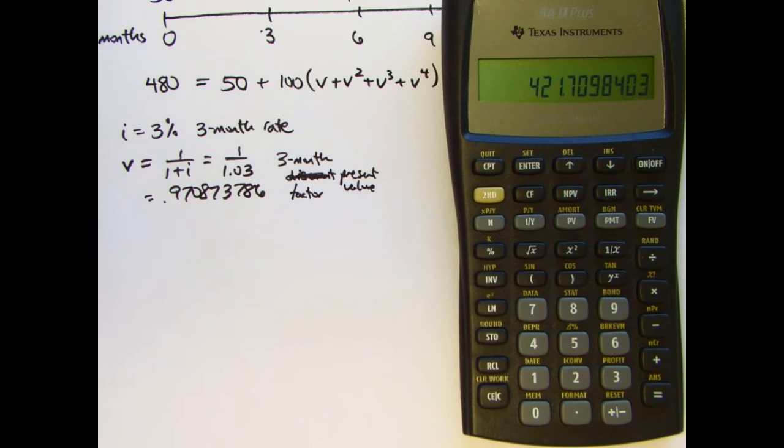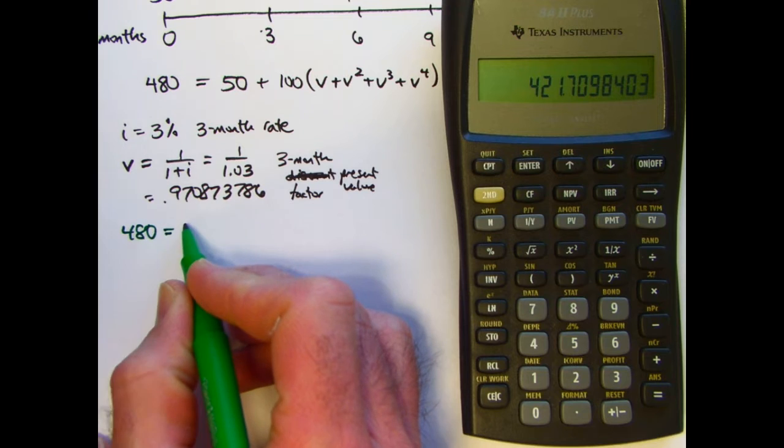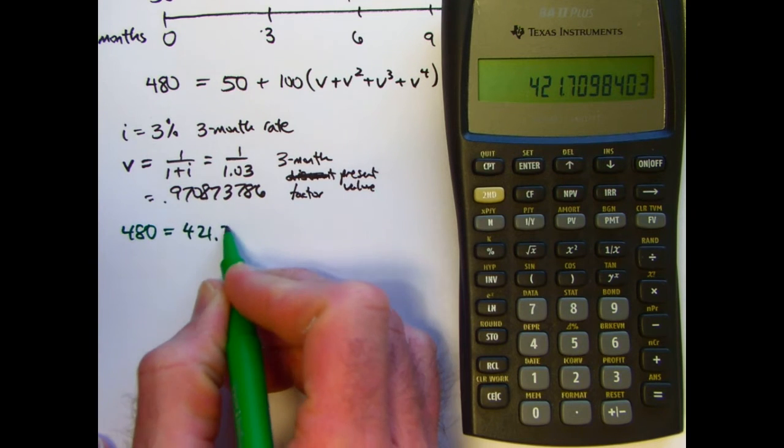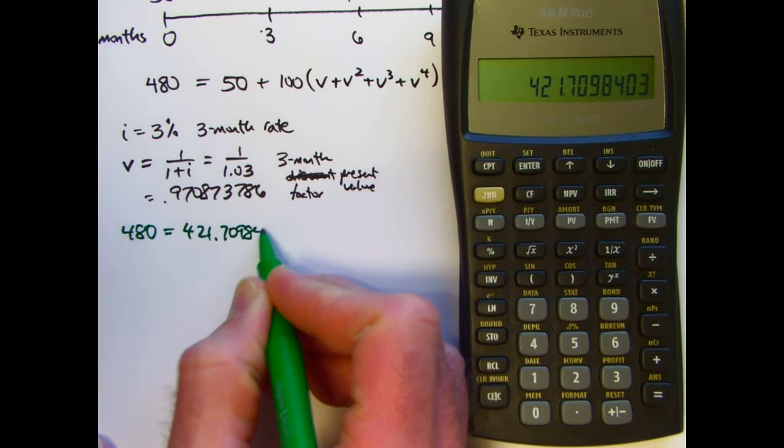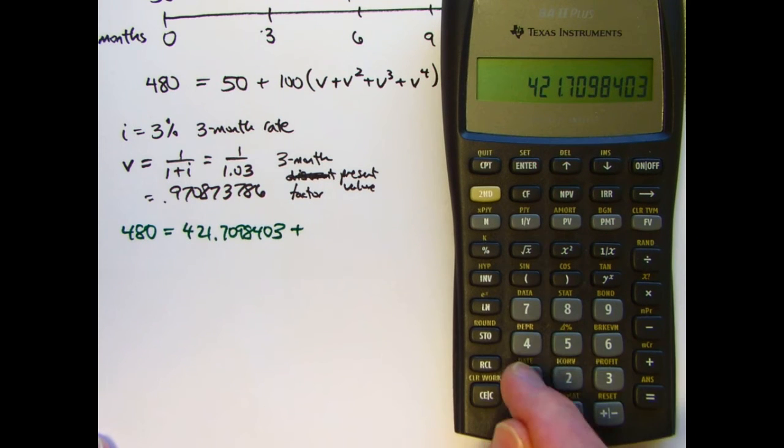480 equals 421.7098403. Plus V to the fifth times X. What is V to the fifth? I'll go back to register one. Raise it to the fifth power.